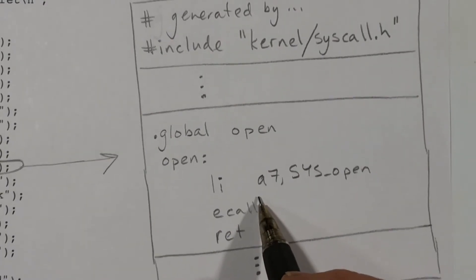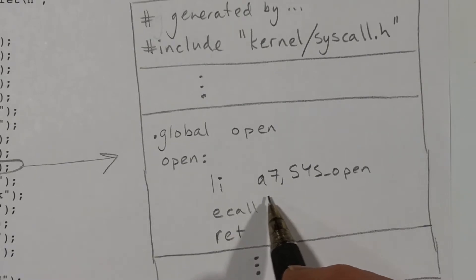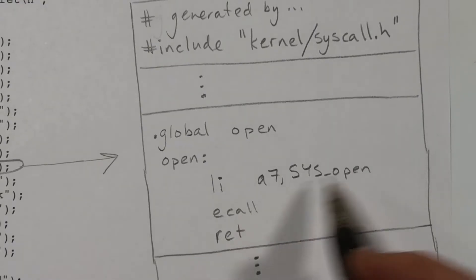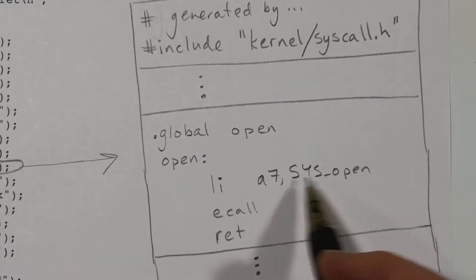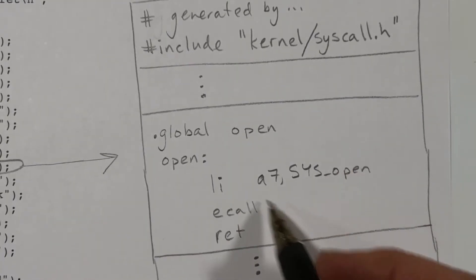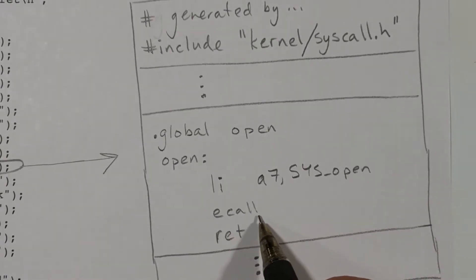ecall will end execution in user mode, switch to kernel mode, and the kernel will execute some code that will do whatever is involved for opening a file. And ultimately, it will return to user mode, and execute the next instruction, which is a return.